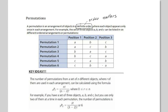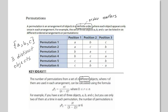The example they've given us here uses objects A, B, and C — three distinct objects. I'm going to use the word distinct; the notes use the word 'different' — it's the same thing. To do a permutation, those objects have to be distinct.